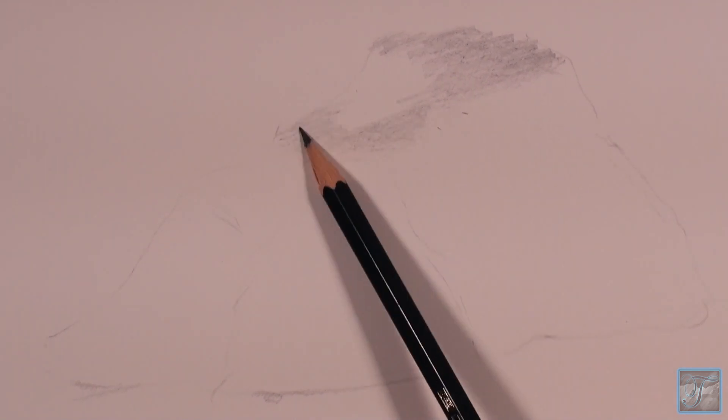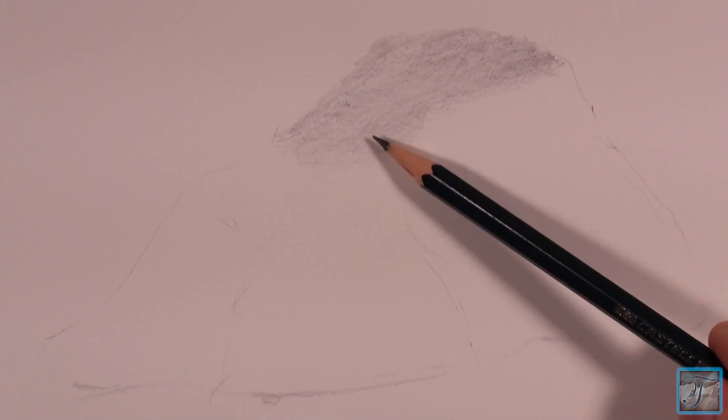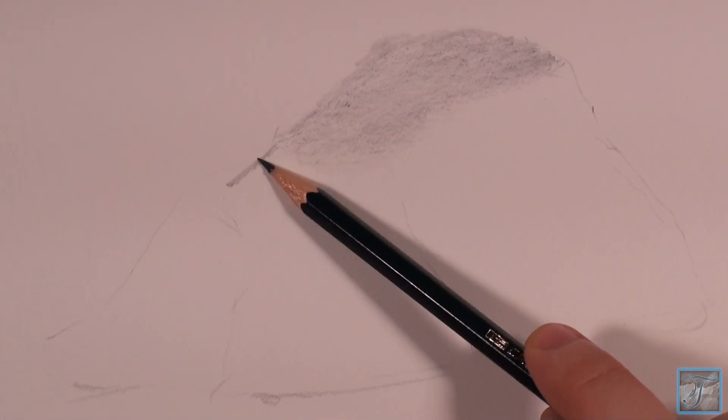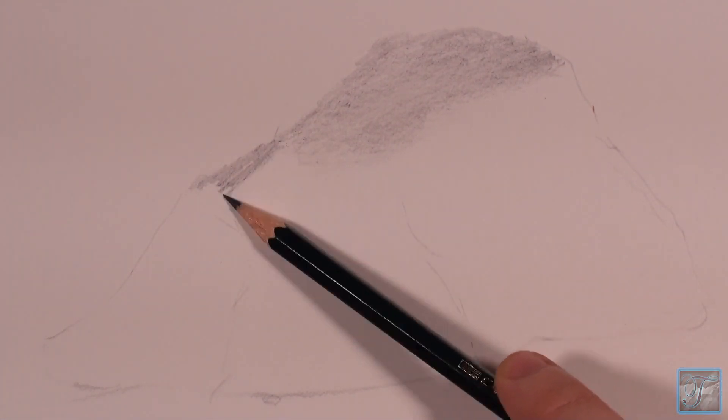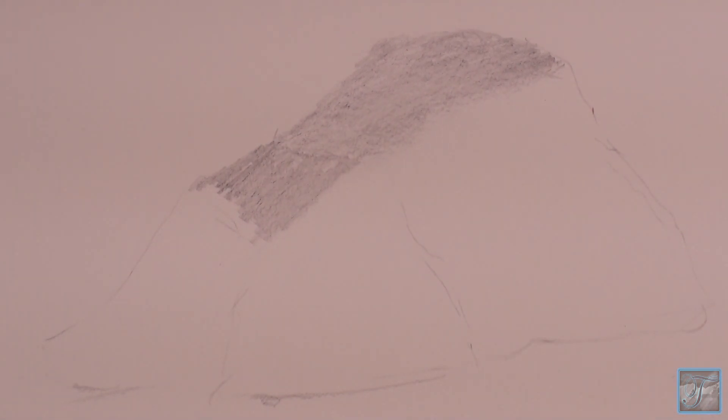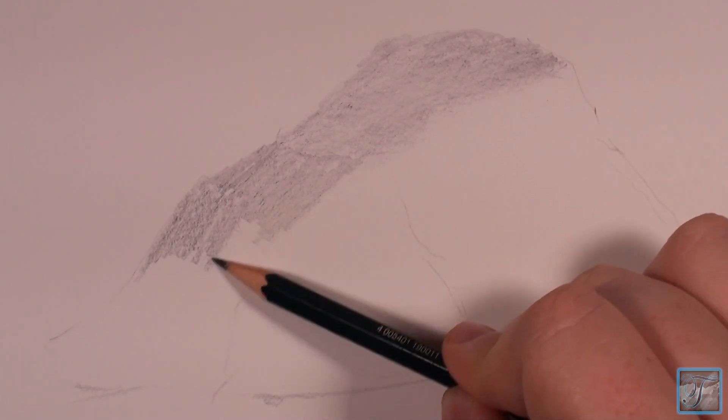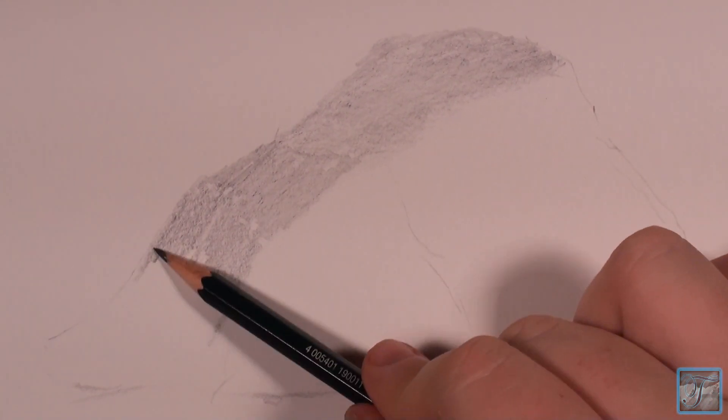I started the top with a 4H pencil. I wanted to keep the top of the rock relatively light. Then more towards the middle section, I used more of a 2H pencil, something around there. Keep in mind if you only have one pencil shade, that's fine, just keep it very light as you're shading. This bottom portion here, I used more of a B pencil, but I kept it on the light side. Notice the direction in which I'm shading—I'm following the lines or the direction of the rock.